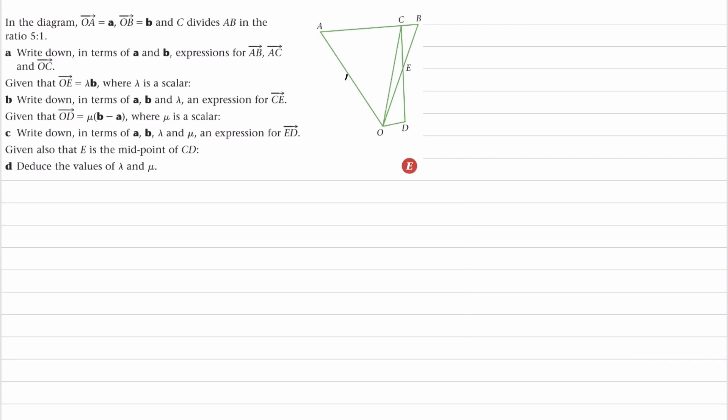So for our diagram, we're told that OA is equal to vector a, OB is equal to vector b, and AB is divided in the ratio of 5 to 1 by C. So this would be 5, this would be 1, and we're trying to write down what AB, AC, and OC are.